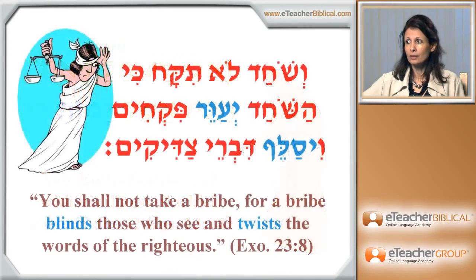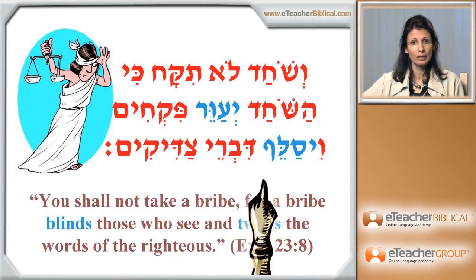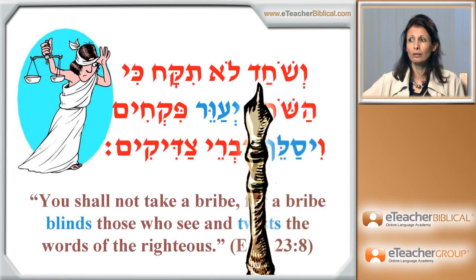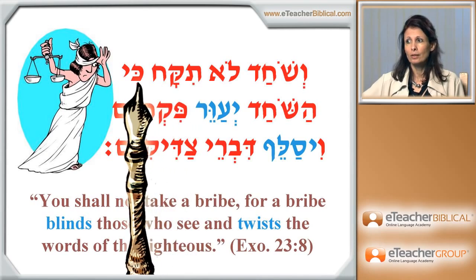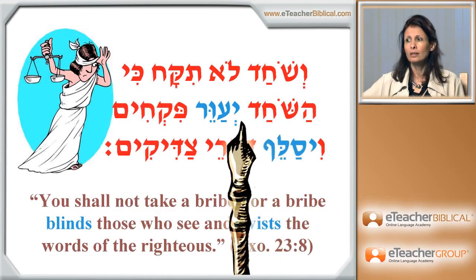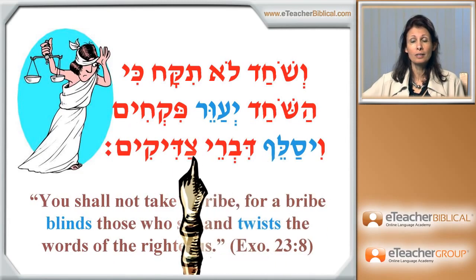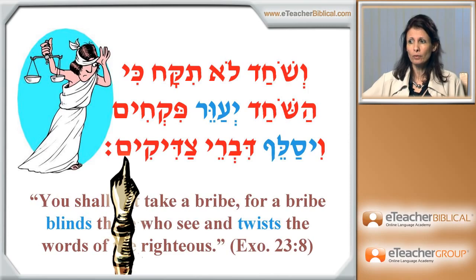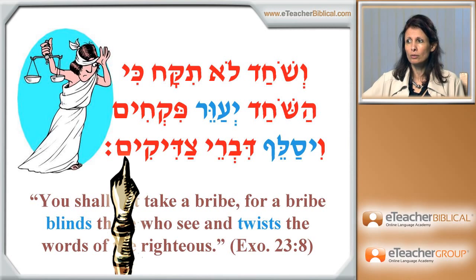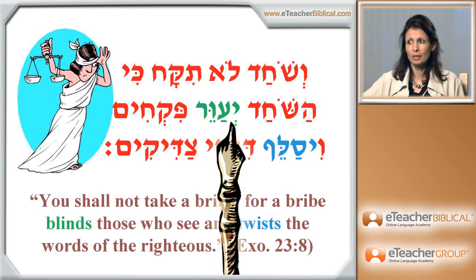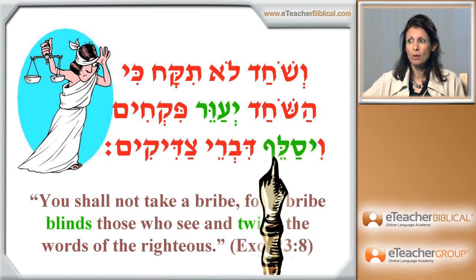Let's see another idea of translating. We will see that from Exodus 23:8. V'shochad lo tikach, ki hashochad ye'aver pikchim v'salef divrei tzadikim. You can clearly see in the translation here that two of the verbs are translated as simple present: ye'aver and salef — although we are dealing with the Iktol verbal form.